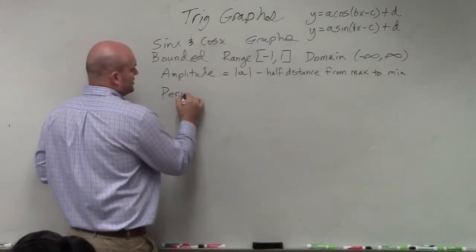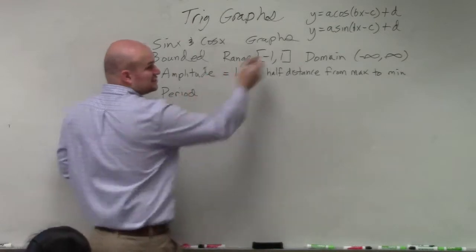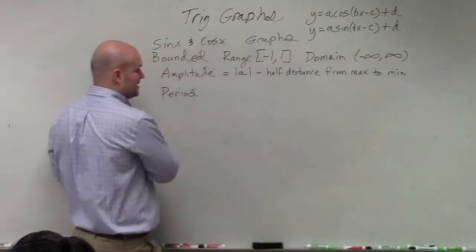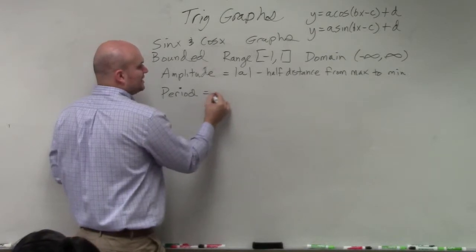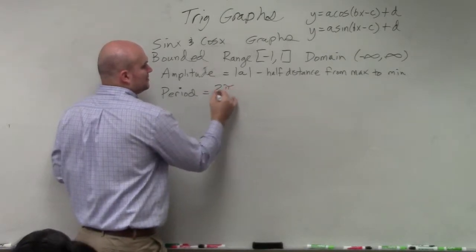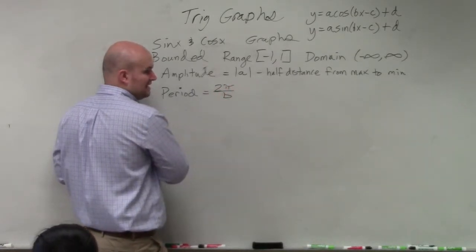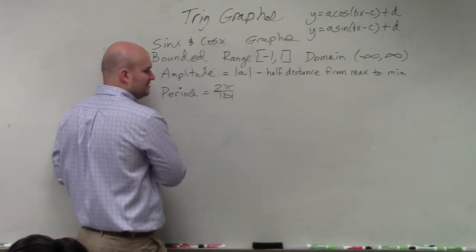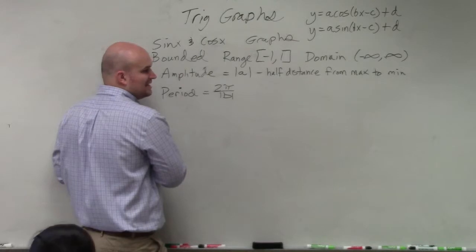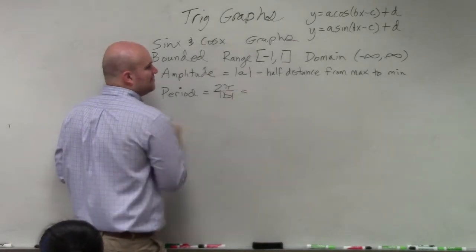The next thing we're going to talk about is the period. And again, this is true for sine or cosine. It does not matter. The next thing is going to be the period. And the period is simply 2 pi divided by b. And that's actually the absolute value of b. It doesn't matter if b is positive or negative.